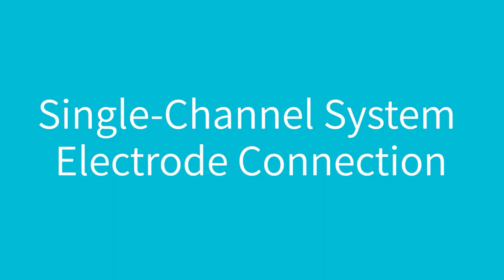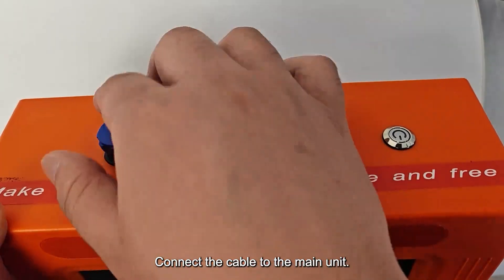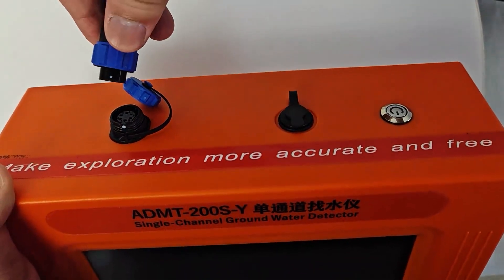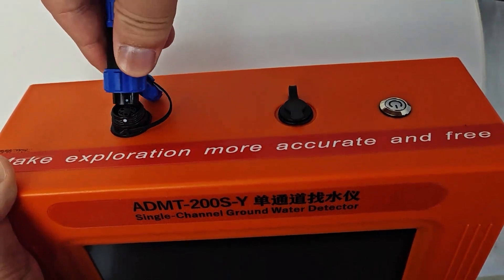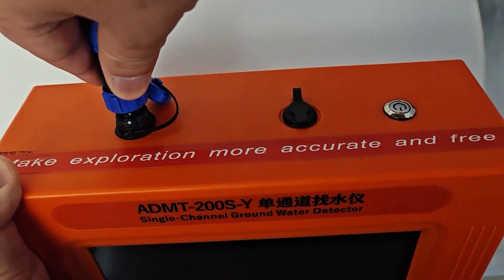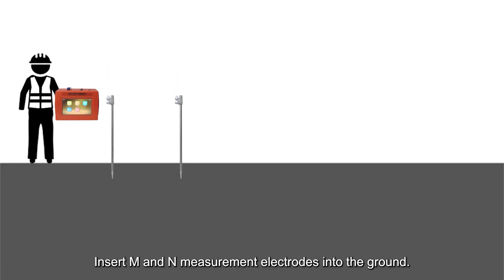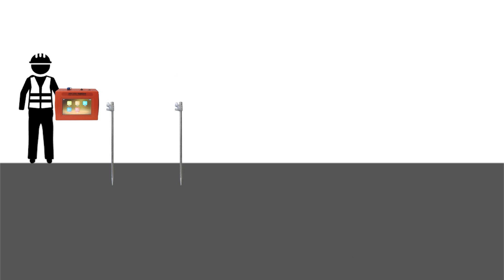Single Channel System Electrode Connection: Connect the cable to the main unit. Insert M and N measurement electrodes into the ground, then connect the cable to the electrodes.